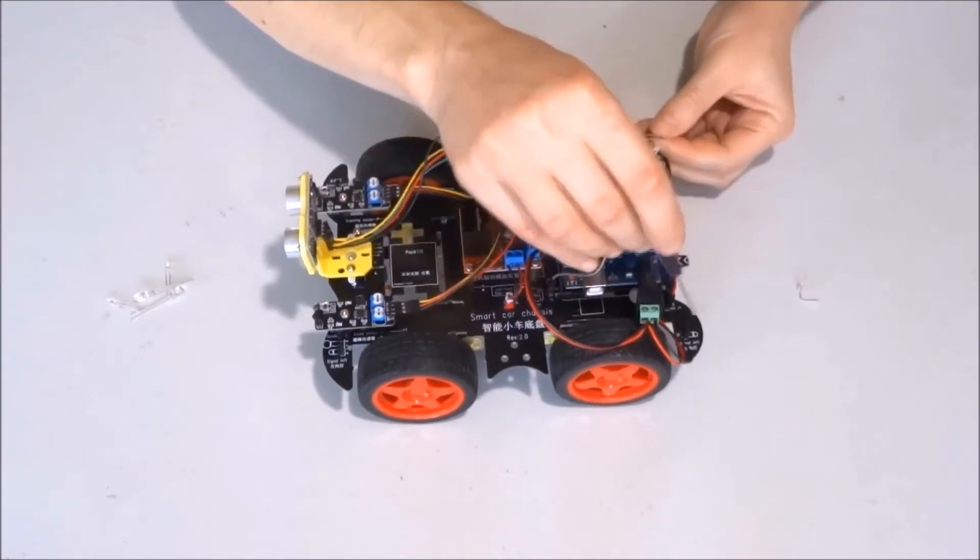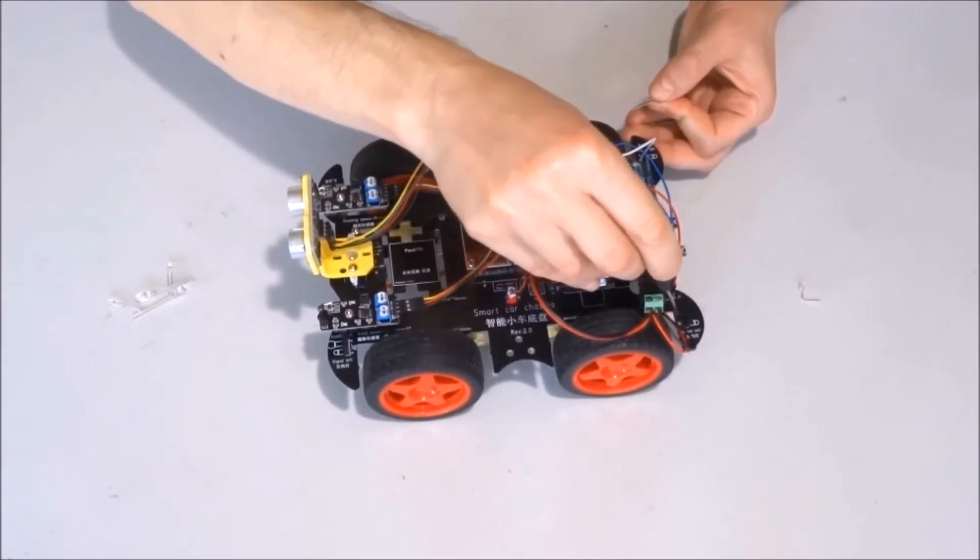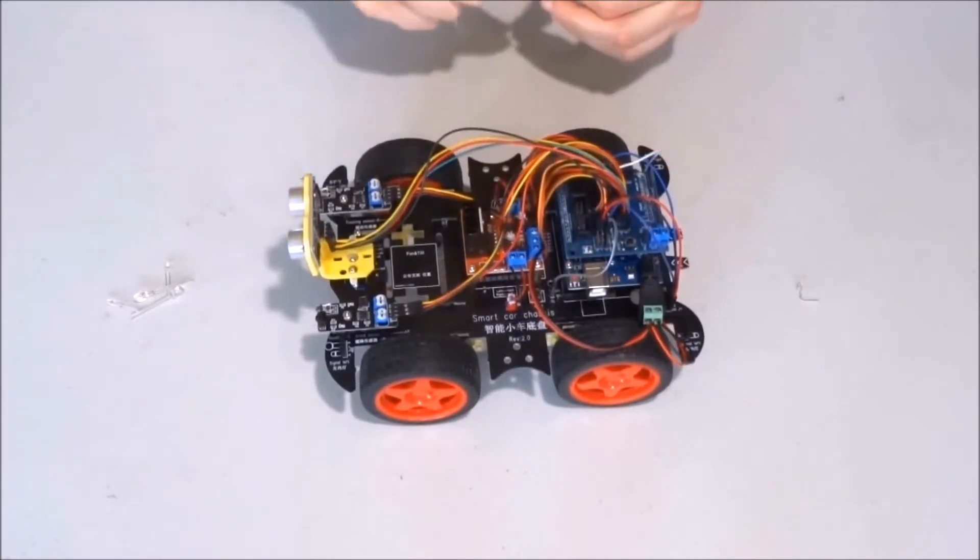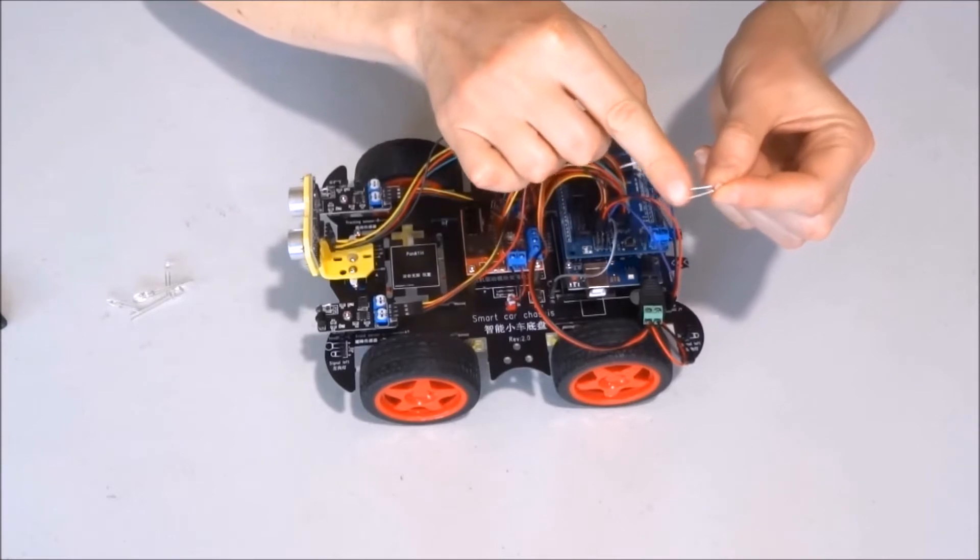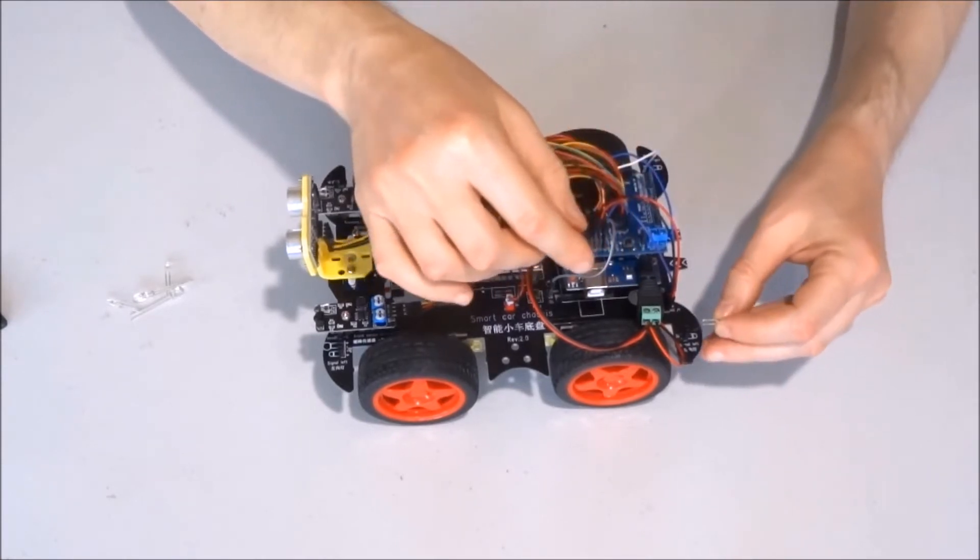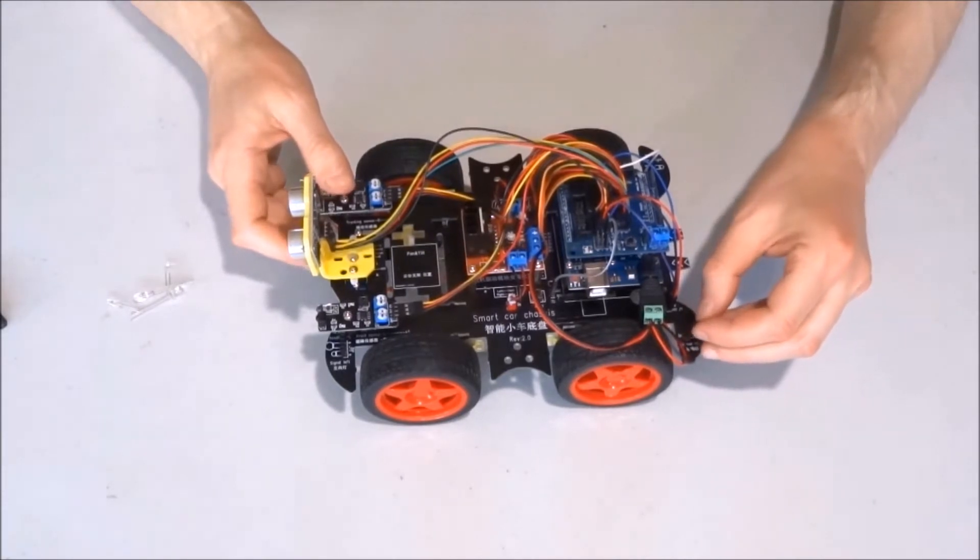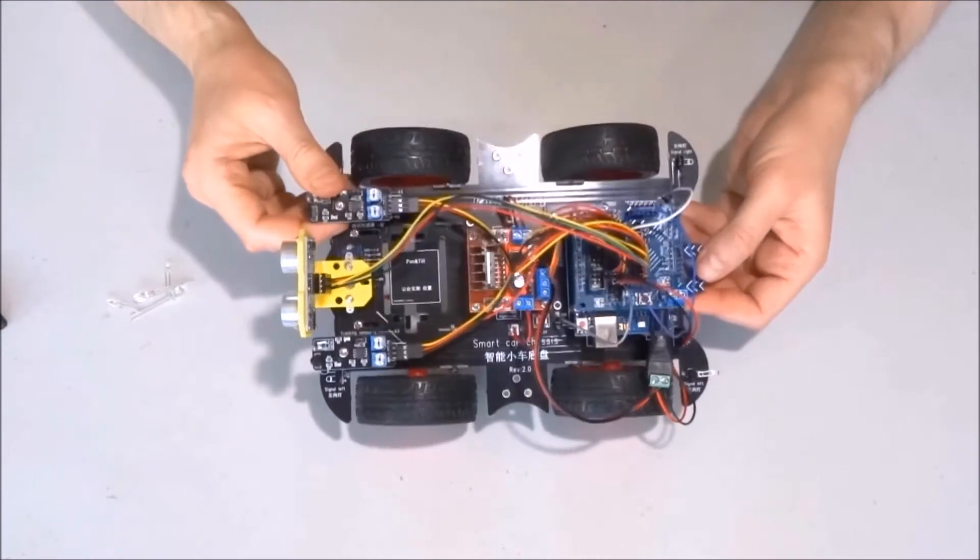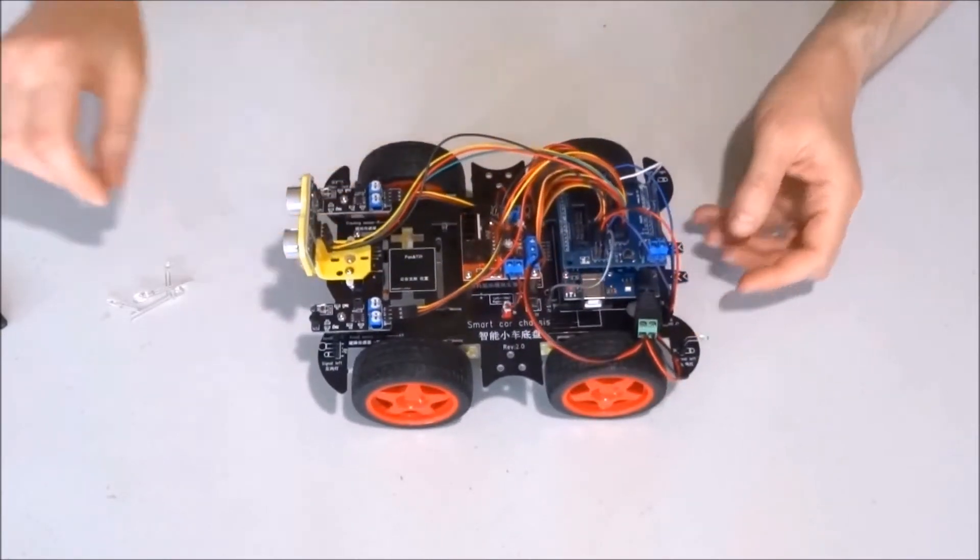the shorter is negative. So plus, minus, minus, plus here. Since I bent it with the longer pin on this side, I will connect it right here. Insert the longer one in the plus and the shorter one in minus.